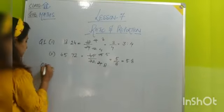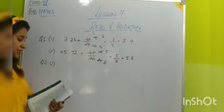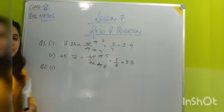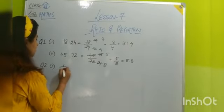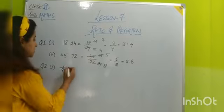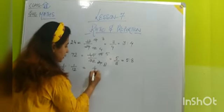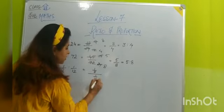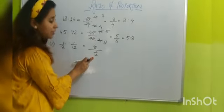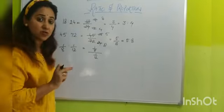Now question number next is again express this in simplest form. In this question also you have to convert to simplest form. So what is given? 1 upon 8 ratio 1 upon 12. So 1 upon 8 divided by 1 upon 12. When 1 upon 12 which is denominator part goes up, what happens? Reciprocal, it becomes inverted.